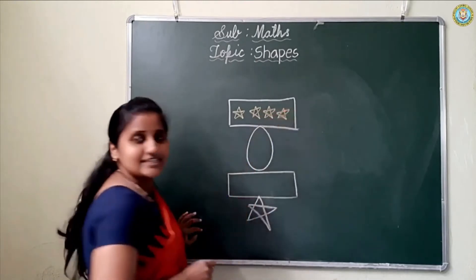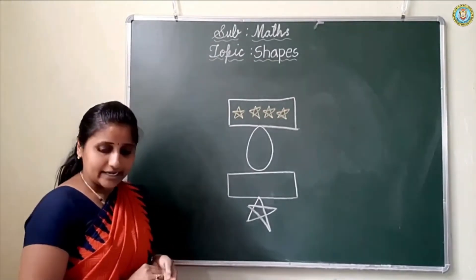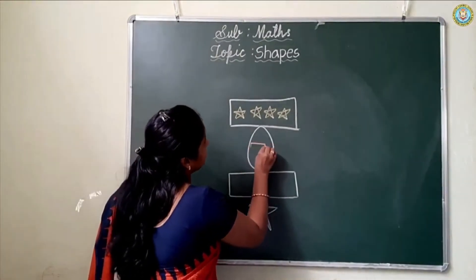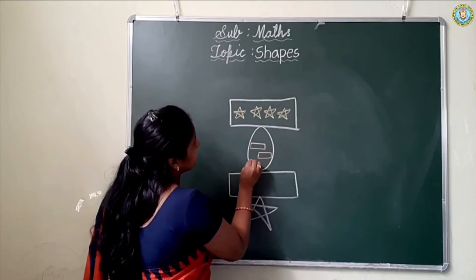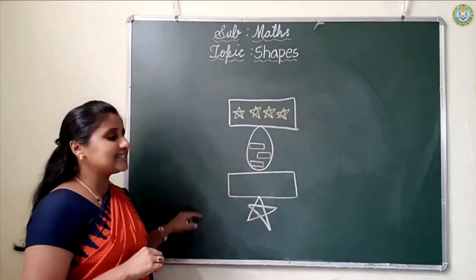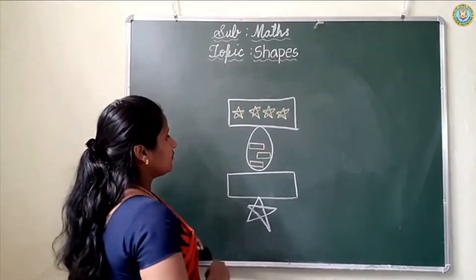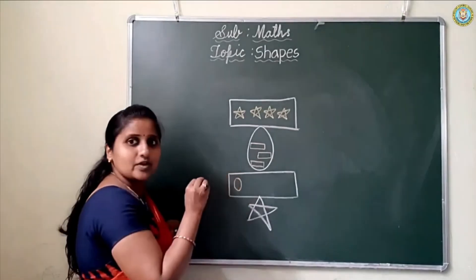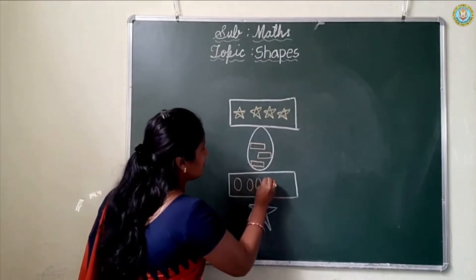Very good. Star. Which shape is this? Star. Okay, next. Which shape is this, children? Rectangle. Which shape is this? Rectangle. Okay, next. Which shape is this, children? Oval. Oval.